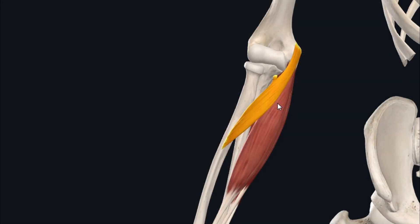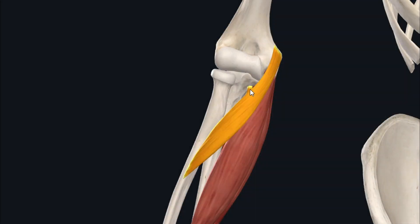The last and most lateral muscle of this group is the pronator teres muscle, with the other superficial flexors lying medial to it. The lateral margin of the pronator teres muscle forms the medial boundary of the triangular anatomical area called the cubital fossa.